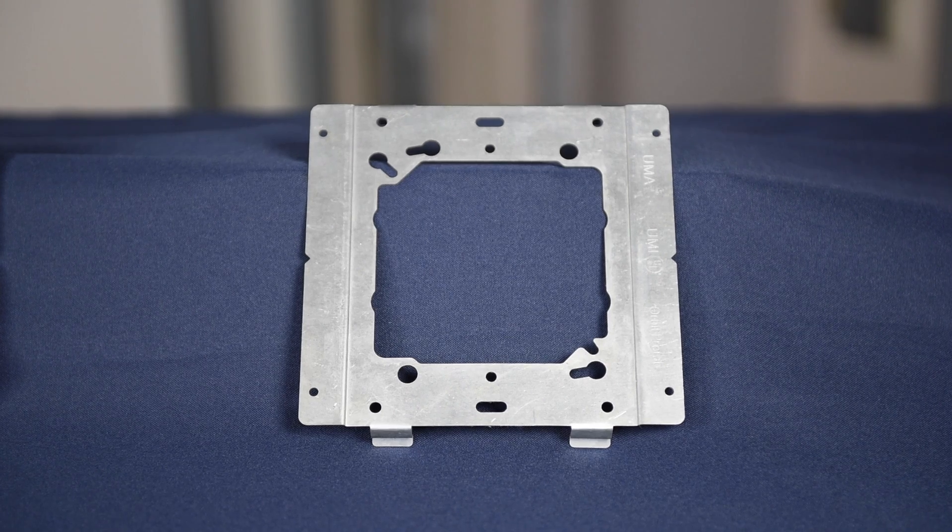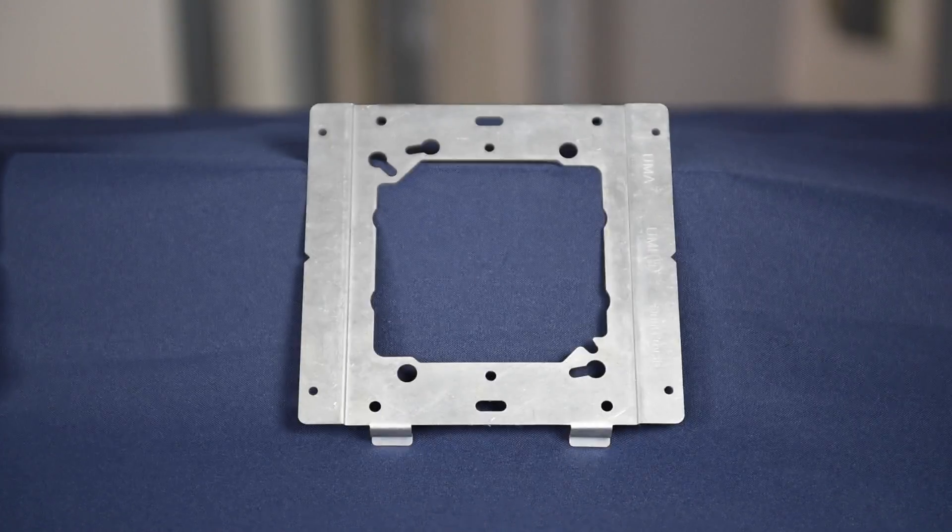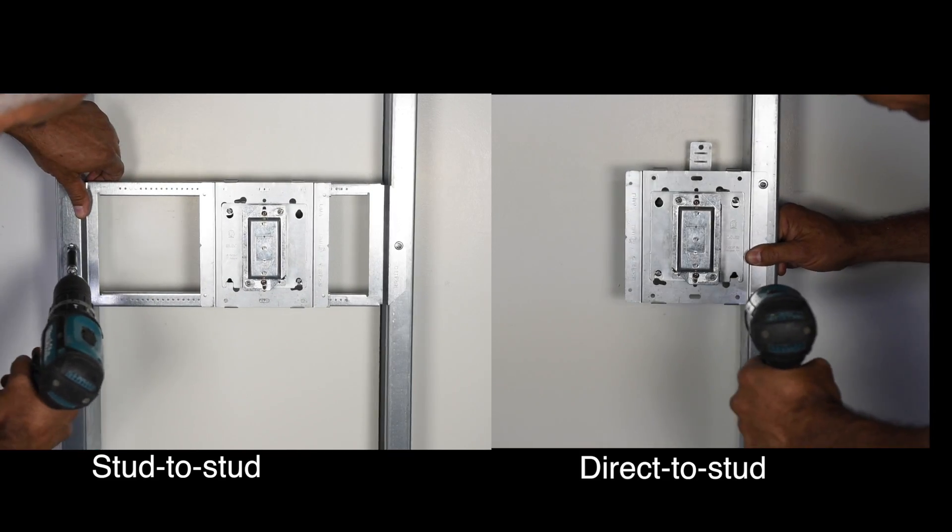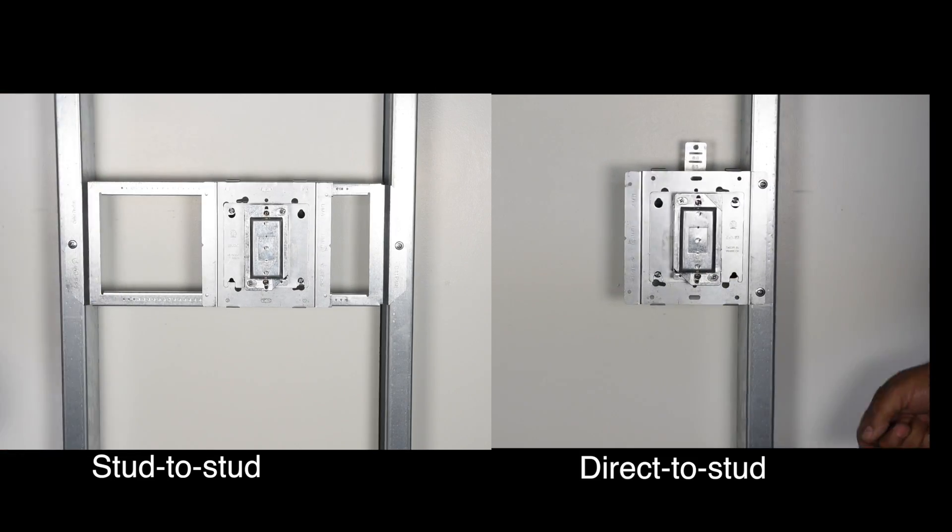Orbit's universal mounting adapter, the UMA, is an innovative adapter bracket that complements the SSB for stud-to-stud mounting, or can be used on its own for direct-to-stud mounting.